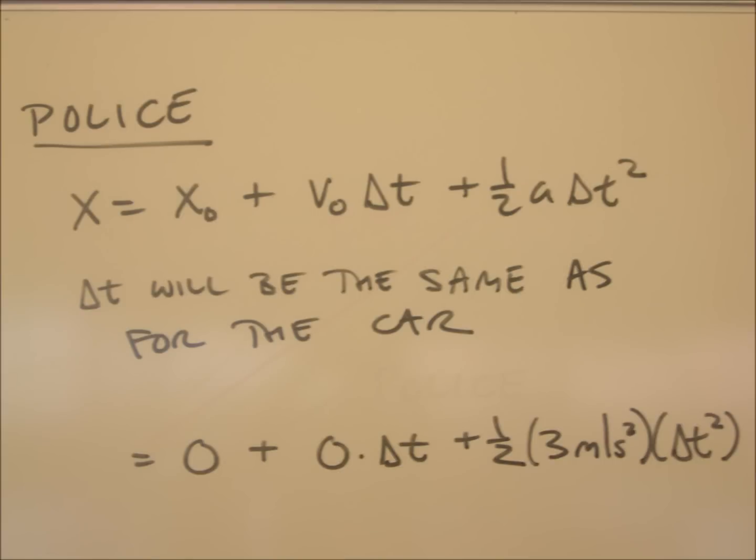Now let's write an expression for the police car. We still have our golden relationship x equals x₀ plus v₀Δt plus ½aΔt². The key thing for this whole problem is to realize that now that we've set t equals zero at the moment that the cop starts to accelerate, that Δt will be the same for the cop as it is for the speeder. The time elapsed will begin when the cop starts to accelerate and will end when the cop catches the driver.